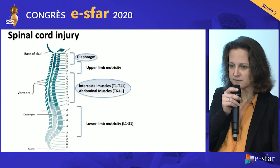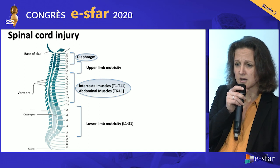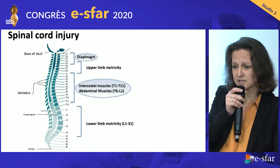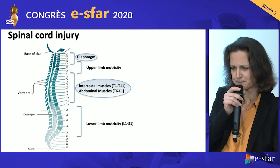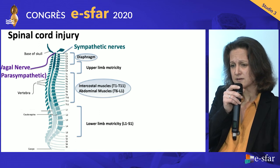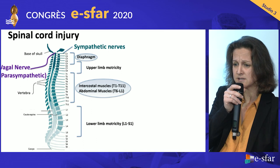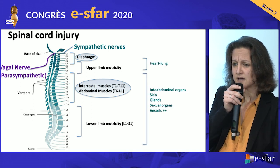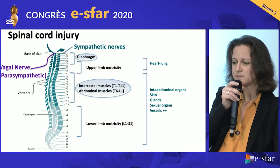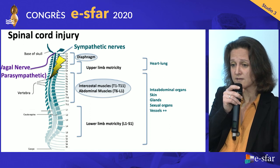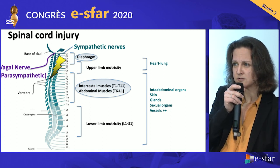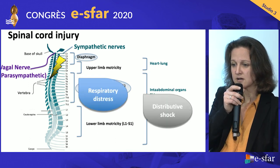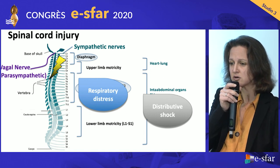To understand that, let's go back to some anatomy. All the muscles are innervated all along the spinal cord, and you can see in pink that the respiratory muscles are all along the cervical and thoracic spine. Then you can have an imbalance between the parasympathetic and sympathetic nervous systems. The sympathetic nervous system goes out at each vertebra, innervating all the internal organs and especially giving vascular tone. So when you have a spinal cord injury, the main life-threatening complications from the beginning are respiratory distress and neurogenic shock, which is a distributive shock because you no longer have sympathetic tone on the vessels.